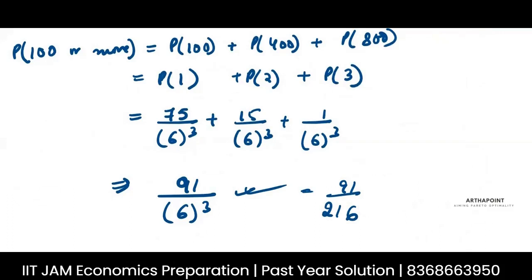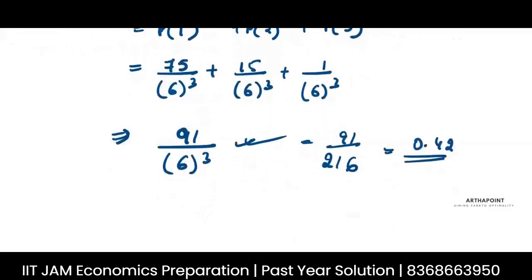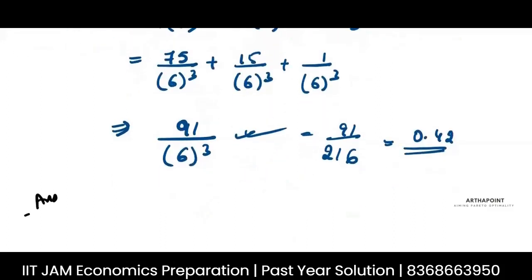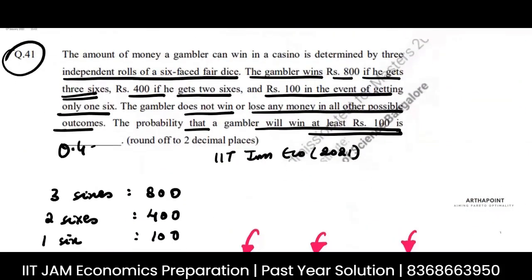So this is going to be 0.42 approximately. The answer in the answer booklet gives you 0.41 to 0.43, but you should give the exact answer. So the answer will be 0.42.